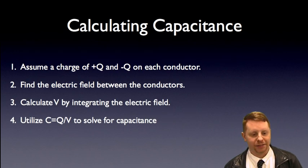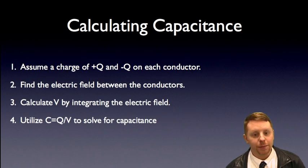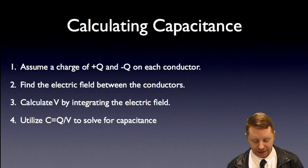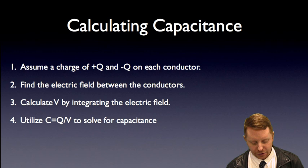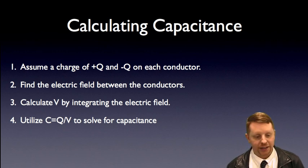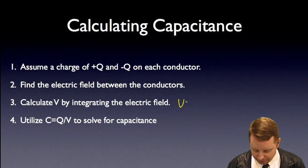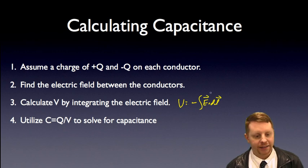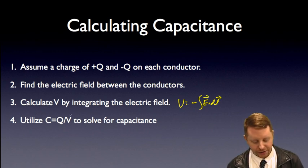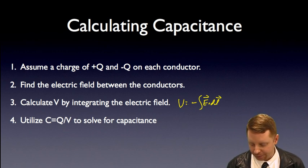To calculate capacitance, first assume that there's a charge of plus Q and minus Q on each conductor. Then find the electric field between the conductors. Calculate the voltage by integrating the electric field — remember V equals minus the integral of E dot dl. Finally, use C equals Q over V to solve for the capacitance. We'll see how that works with a couple of examples.